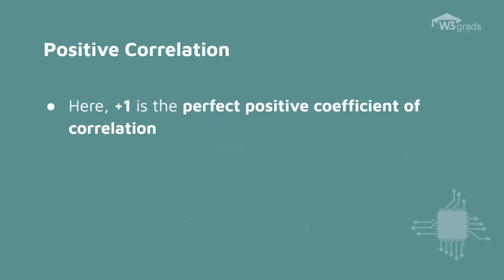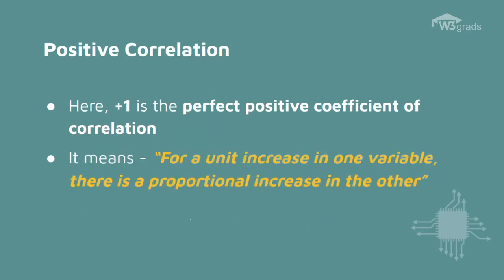The positive correlations range from 0 to plus 1. The upper limit, that is plus 1, is the perfect positive coefficient of correlation. The perfect positive correlation specifies that for every unit increase in one variable, there is a proportional unit increase in the other. For example, heat and temperature have a perfect positive correlation.